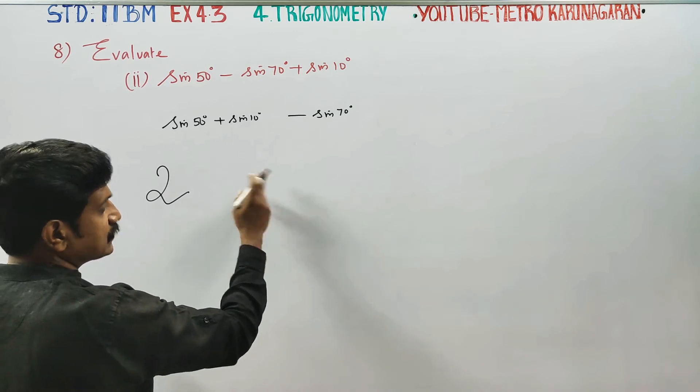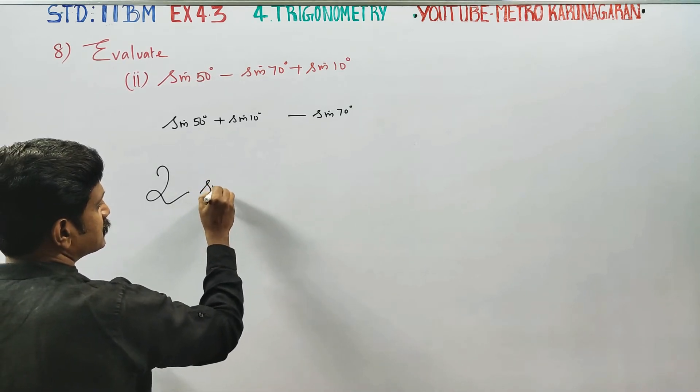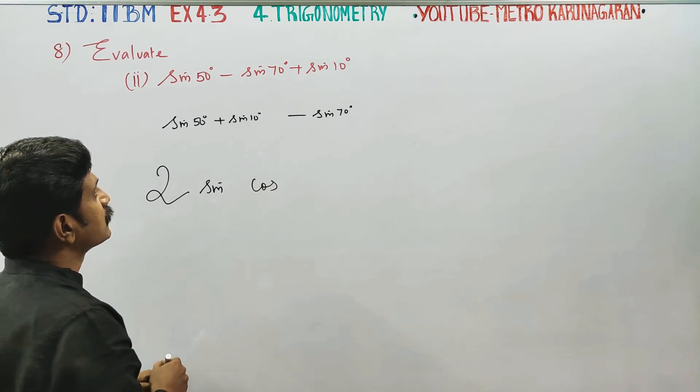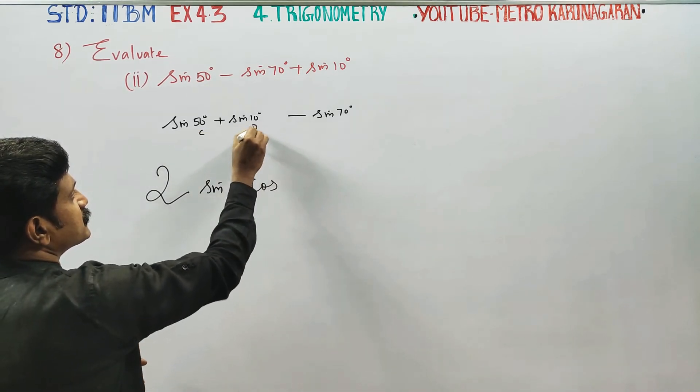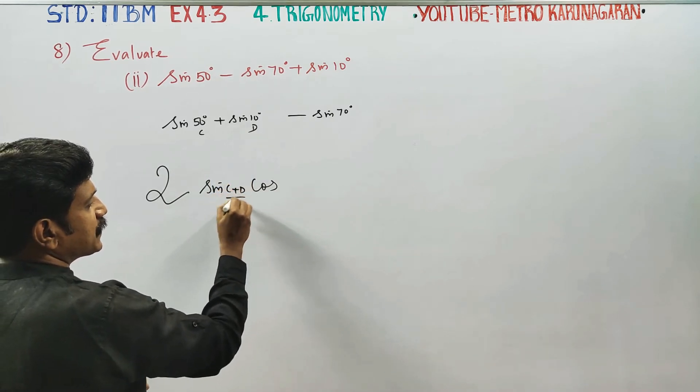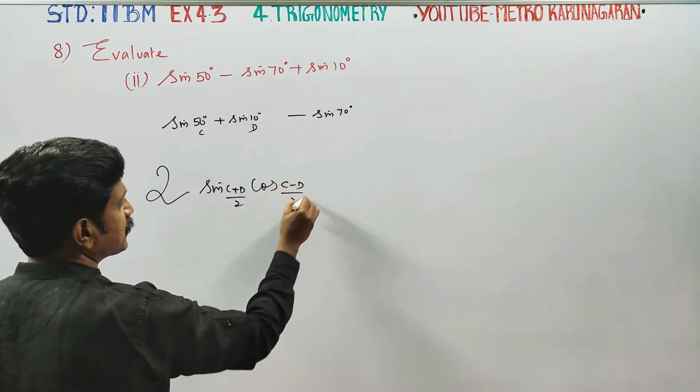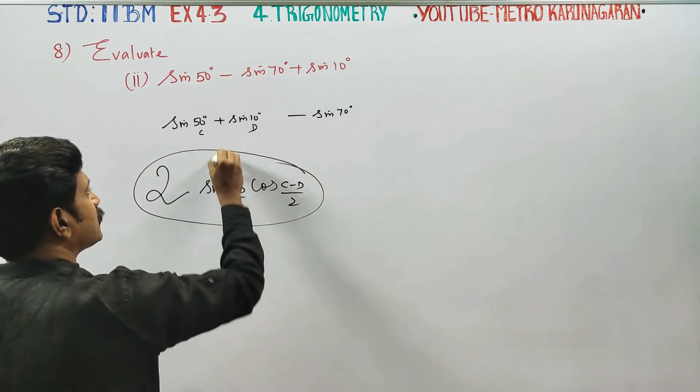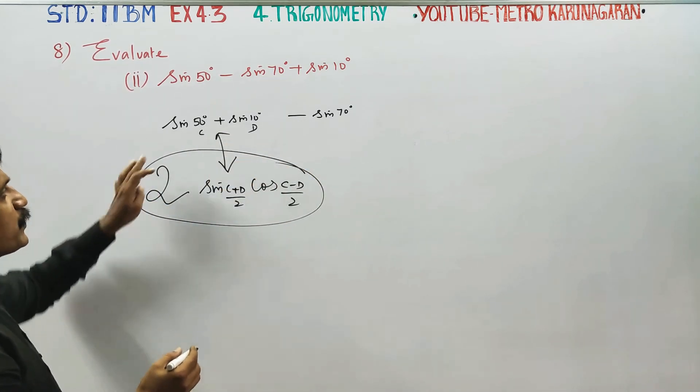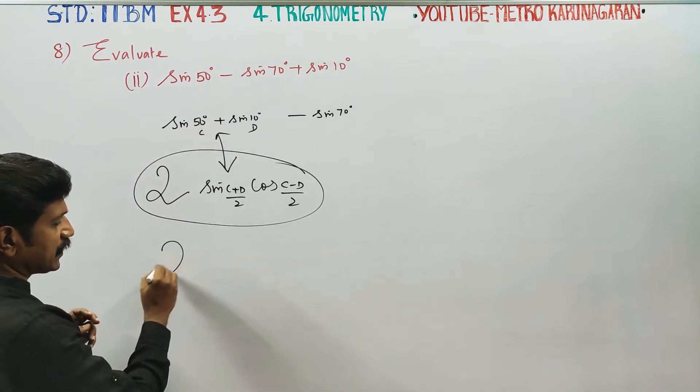In the product you'll get sin cos, cos sin. Plus will give sin cos. If it's C and D, sin C plus sin D formula is sin C plus D by 2, sin C minus D by 2. You need to recall this formula. If you don't know the formula, you'll have problems. Sin and sin together will give 2 times.